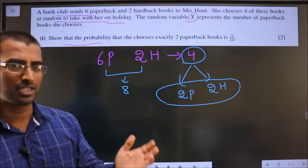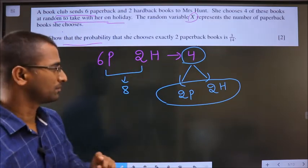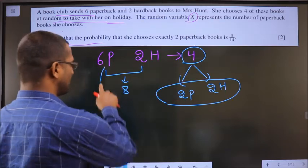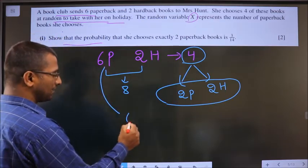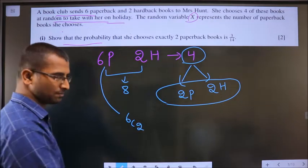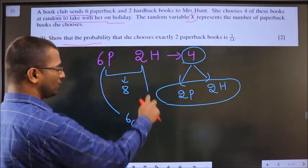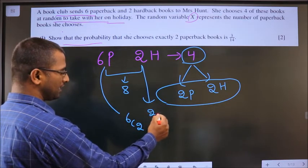Now using combinations once you get the idea is very easy. And how do we do? I want 2 paperbacks. There are 6 paperbacks. That can be done in 6C2 ways. Easy, right? Now I want 2 hardbacks. There are 2 hardbacks that can be done in 2C2 ways.